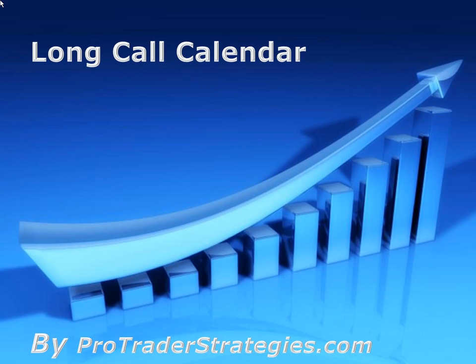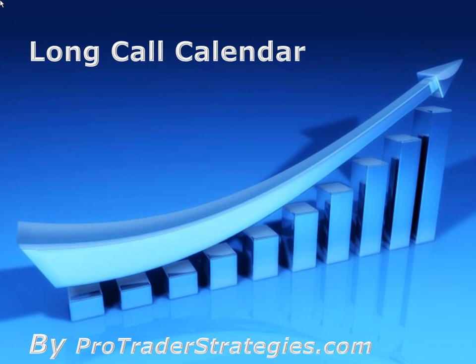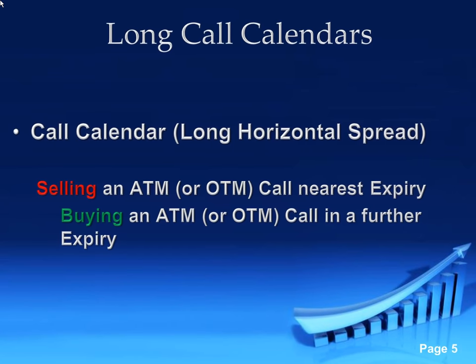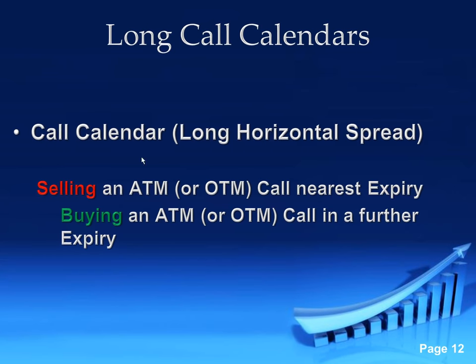Let's get into the long call calendar. It's a pretty simple strategy to build. It is a calendar spread or horizontal spread — basically we're going to be using two different expiration cycles. There are benefits to that, but there's also some gray area because of the different expiration cycles, which makes it difficult to figure out a break-even, for instance.